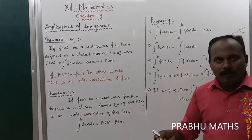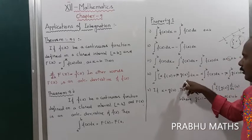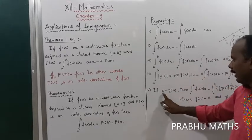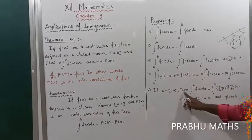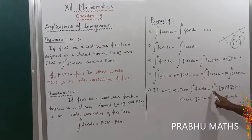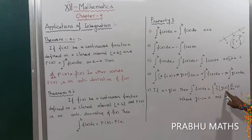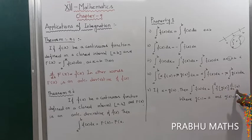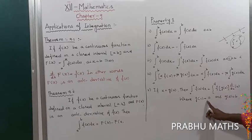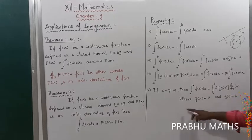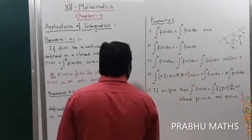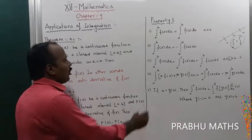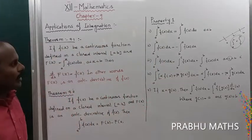Property five is the substitution method: let x equal g of u. Then the integral from a to b of f of x dx equals the integral from c to d of f(g(u)) times g'(u) du, where g(c) equals a and g(d) equals b. Property two is very important — the integral from a to b of f of x dx equals minus the integral from b to a of f of x dx. When we change the limit, we change the sign to minus.